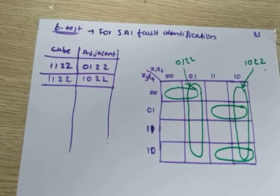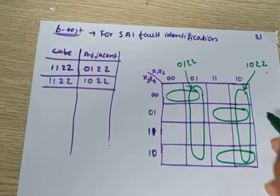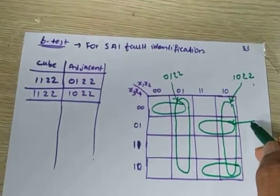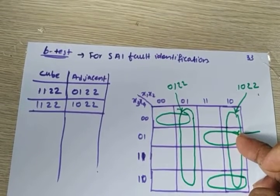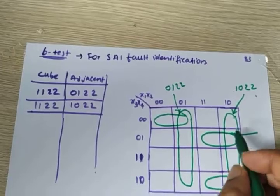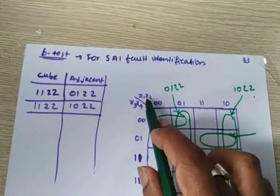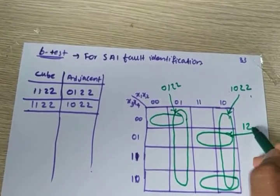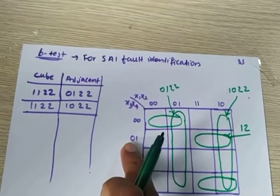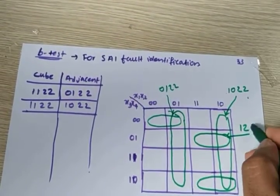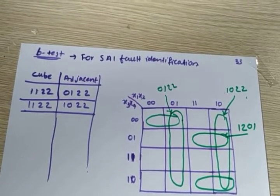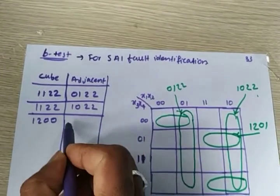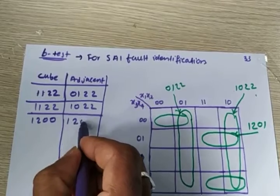So we have 4 groups. What is this group and how to write it? In this group, x1 can always have value 1, so it is 1. x2 can have 1 or 0, so it is 2. Under this group x3 has only 0 value and x4 is 1 — so it is 1·2·0·1. So the first adjacent cube is 1·2·0·1.